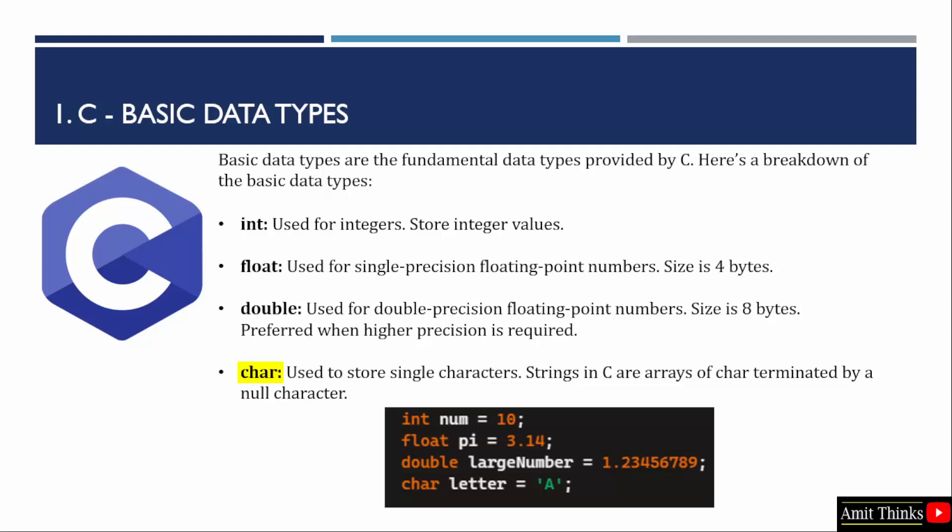Next is char. Char as the name suggests is for characters, to store single characters. It is one of the fundamental data types in C. Its size is typically 1 byte, 8 bits. It is used to store single characters such as letters and symbols. Strings in C are arrays of this char only, terminated by a null character. We will work around these data types in the upcoming lessons in our programs. We will also use the char data type to create strings in C language.